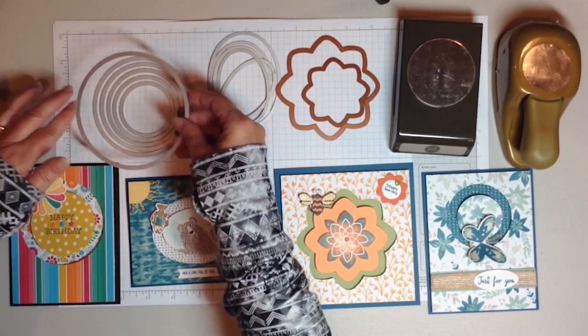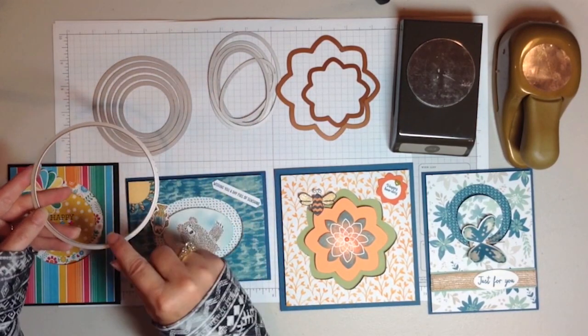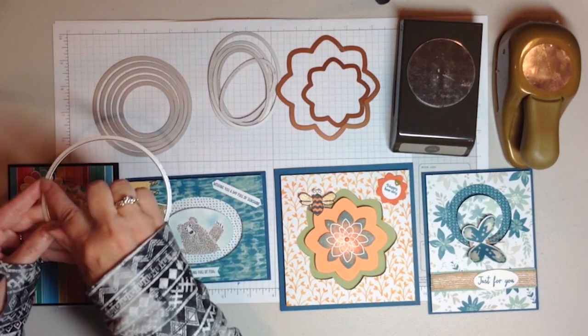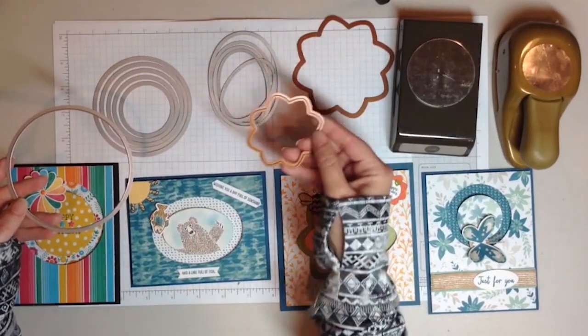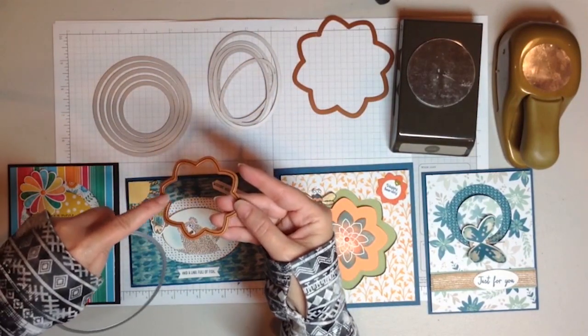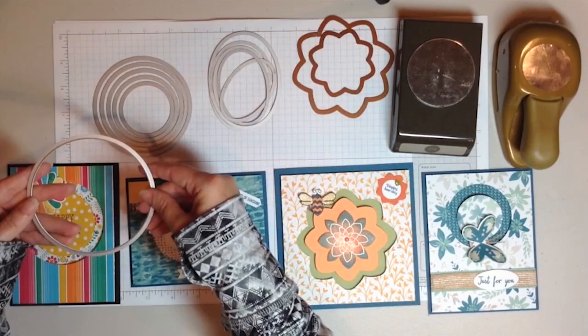One thing that you need to note is that some dies will have the cutting edge in a different place. In this set it happens to be on the inner edge and on this particular brand the cutting edge is in the center. Just keep that in mind when you're measuring.